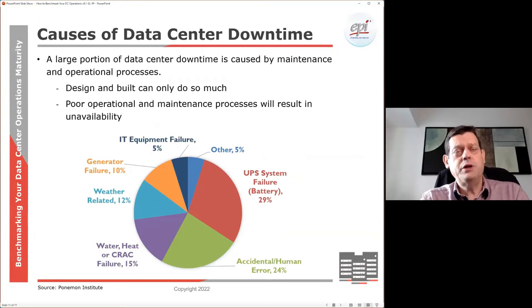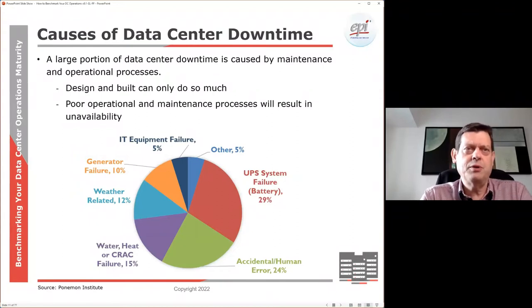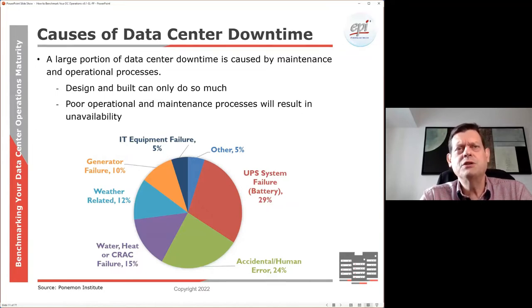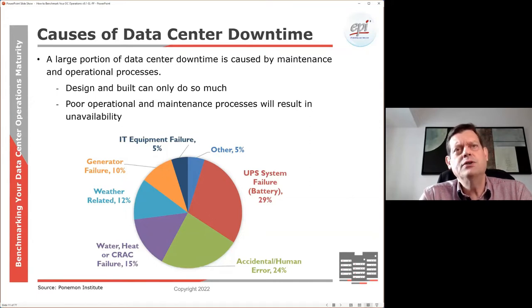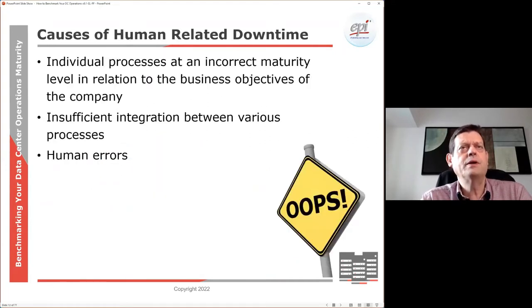So what is a typical issue in data centers — why do data centers go down? There is a variety of research in the market. The numbers vary by organization, but the idea is that there is a portion due to mechanical failures — UPSs, generators, cooling systems — and also a large portion due to accidents and human error, and that is where we need to put good focus.